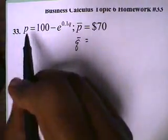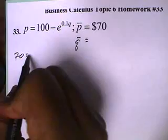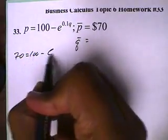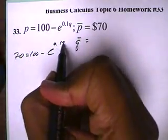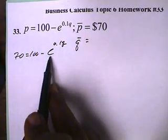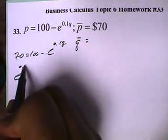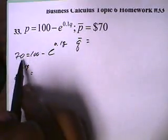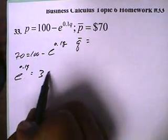So the current price is 70 in the formula. So we'll have 70 equals 100 minus e to the 0.1q power. And I'll add e to both sides. So we'll have e to the 0.1q power. And I'll subtract 70 from both sides, and we'll get 30.